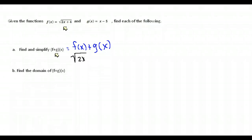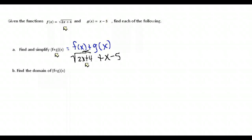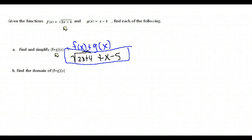f of x is the square root of 2x plus 4, and we're going to add to that x minus 5. There is no way for us to simplify that any further because we can't combine things that are under a radical with things that are not under a radical, and we can't combine x's with plain numbers. So our simplified answer is the square root of 2x plus 4 plus x minus 5.